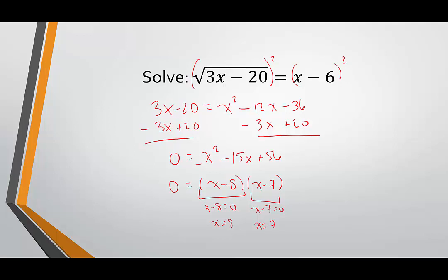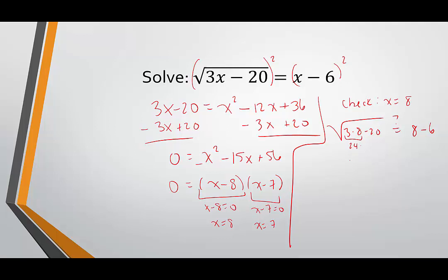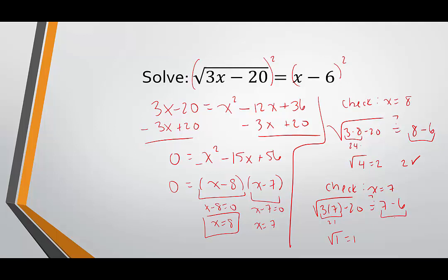We do need to check both solutions to make sure they're not extraneous. Checking x equals 8: the square root of 3 times 8 minus 20 equals 8 minus 6? 3 times 8 is 24, minus 20 is 4, and the square root of 4 is 2; 8 minus 6 is 2 — it works. Checking x equals 7: the square root of 3 times 7 minus 20 equals 7 minus 6? 21 minus 20 is 1, square root of 1 is 1; 7 minus 6 is also 1 — it works. Both solutions are valid: x equals 7 or x equals 8.